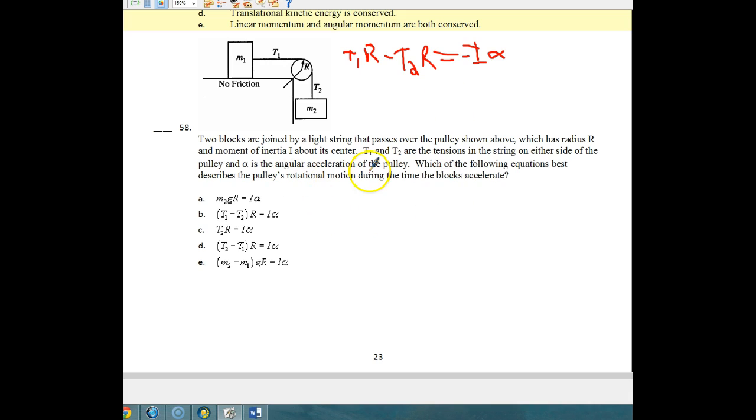At this point, they want us to figure out which one of these will give us the pulley's rotational motion during the time that this thing accelerates. Notice there's no negatives here. If we get rid of the negative, that makes this one positive, that makes this one negative. So we have to pick the one where we have R factored out. So there's our R. We've got T2 minus T1. And then that is equal to I times alpha. And so our equation has got to be letter B. And that's number 58.